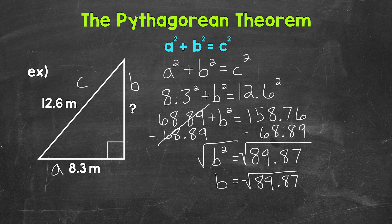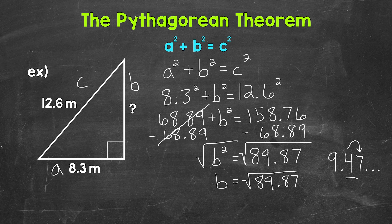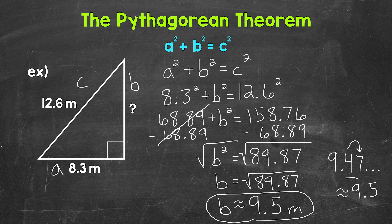Since the other side lengths of this triangle go to the tenths place, let's round to the tenths place. The square root of 89 and 87 hundredths gives us 9.47, and again this continues on. There's a 4 in the tenths place with a 7 to the right in the hundredths, so this rounds up. This is approximately 9 and 5 tenths. So b is approximately 9 and 5 tenths meters. The missing side length, the missing leg, is approximately 9 and 5 tenths meters.